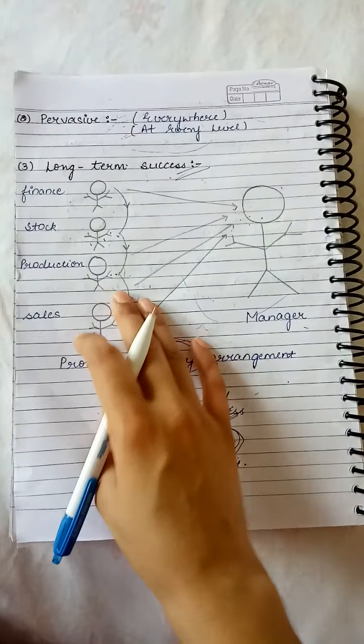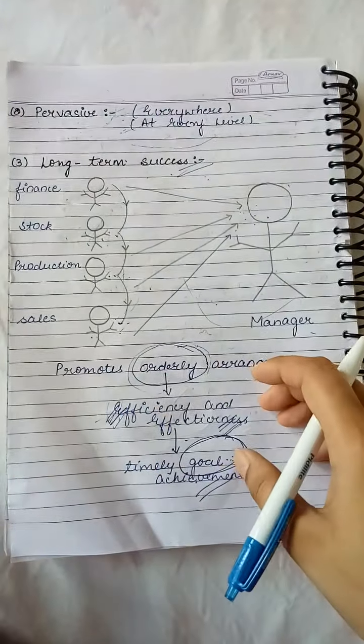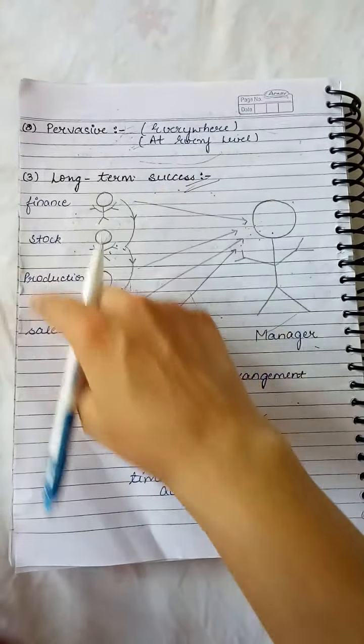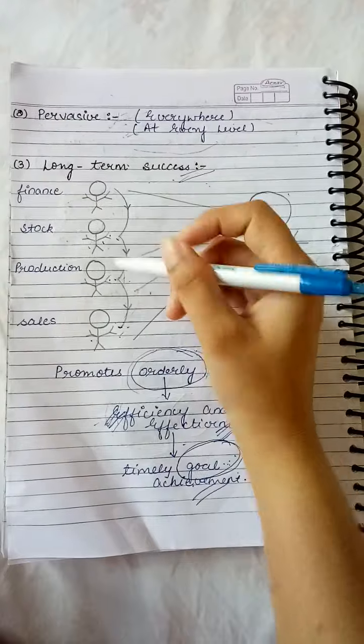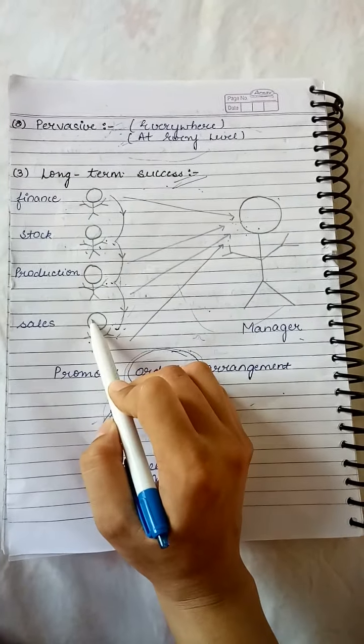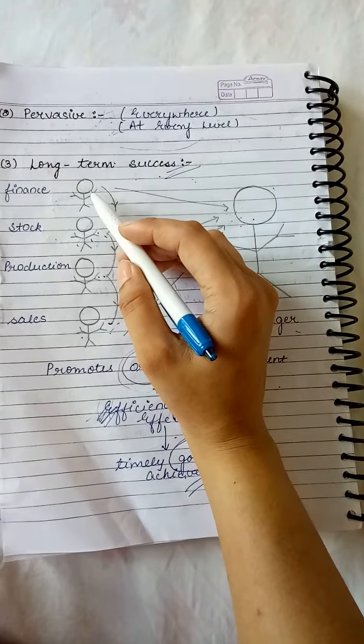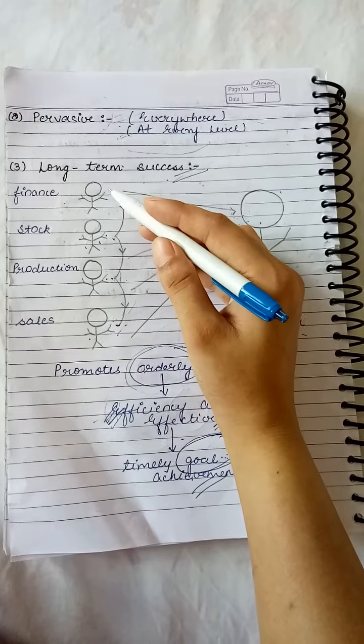Coordination said let me understand why I am an essence of management. Long term success. Coordination said, take different departments: finance department, stock department, production department, and sales department. Coordination ensures that all these departments have relationships with each other. Finance person maintains relationship with stock department. They will say if you don't have raw material, take it. Take my money. I have enough money.